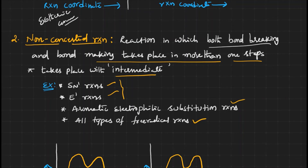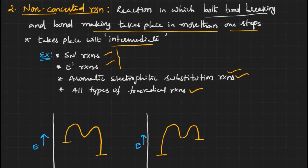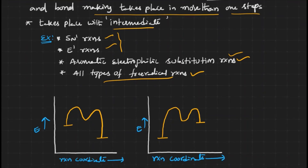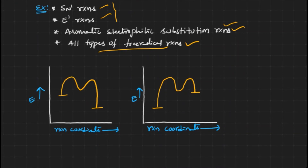In SN1 and E1 reactions, the carbocation is the intermediate. In aromatic electrophilic substitution reactions, the sigma complex is the intermediate. In all types of free radical reactions, the free radical itself is the intermediate.